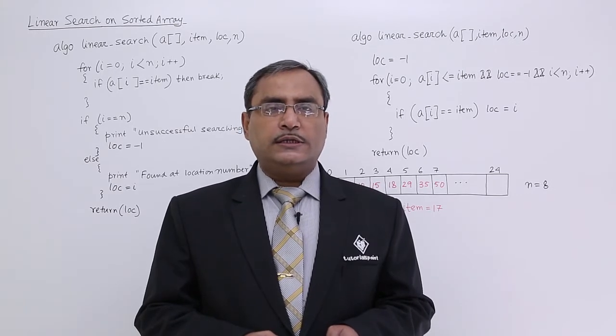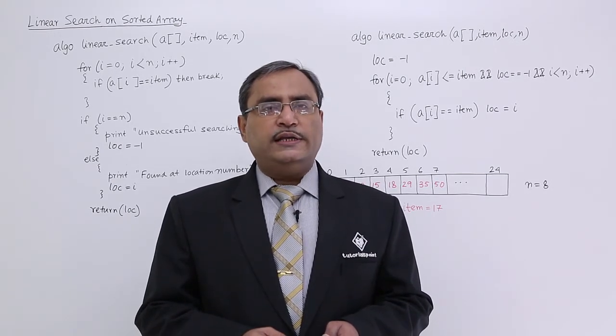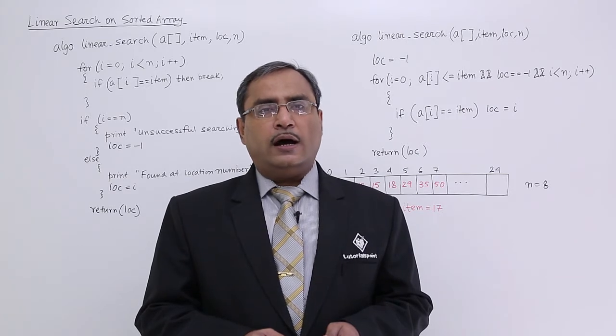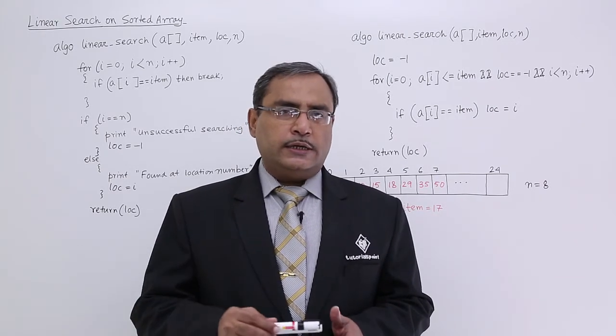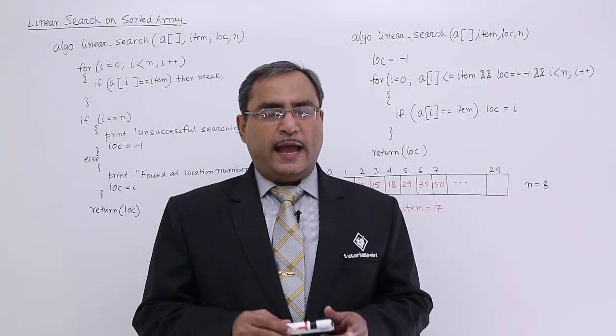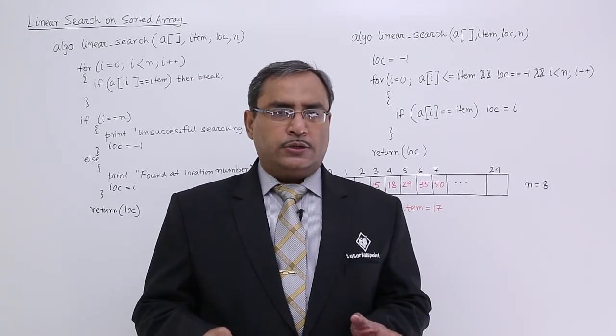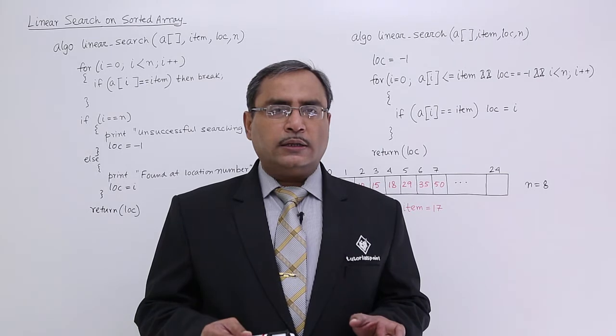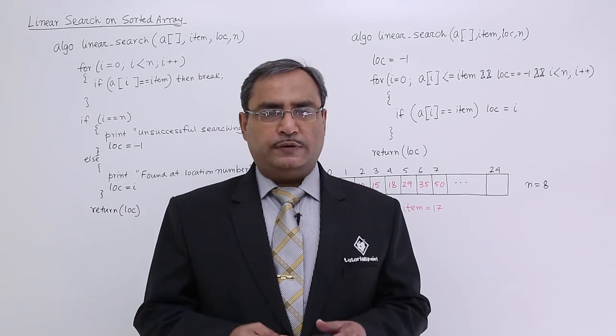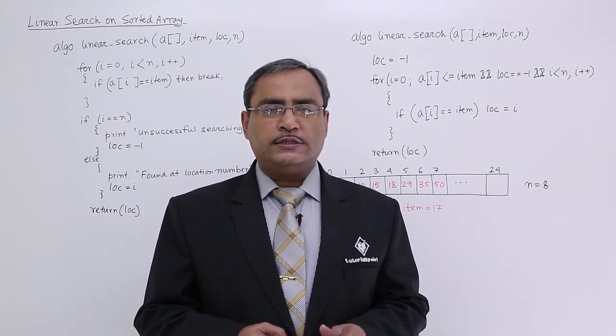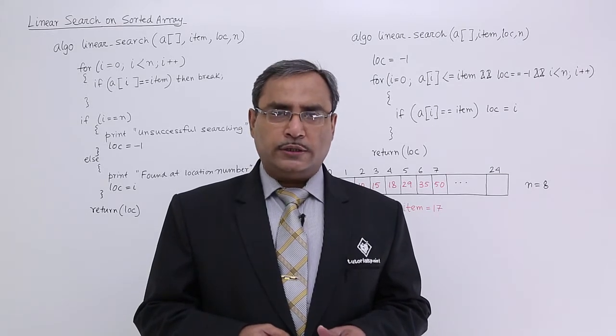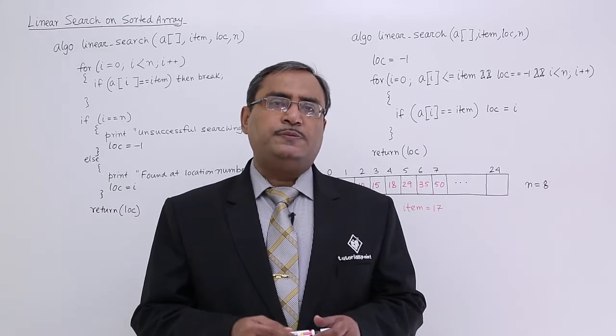In the last session, we discussed the linear search or sequential search on an unsorted array. But here, we are considering that the array is pre-sorted, either ascending or descending. So now, what will happen and what updates should we observe in our algorithm of linear search if the array is pre-sorted?